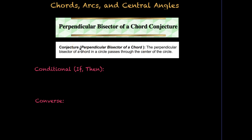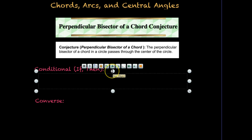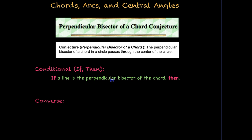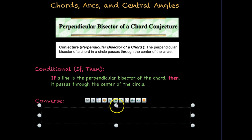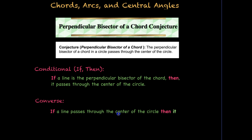Let's write this as a conditional if-then statement: if a line is the perpendicular bisector of a chord, then it passes through the center of a circle. Knowing where the center of the circle is and that the line passes through it will help us determine if it's a radius or not. The converse — switching the condition and conclusion — states: if a line passes through the center of the circle, then it is the perpendicular bisector of the chord.